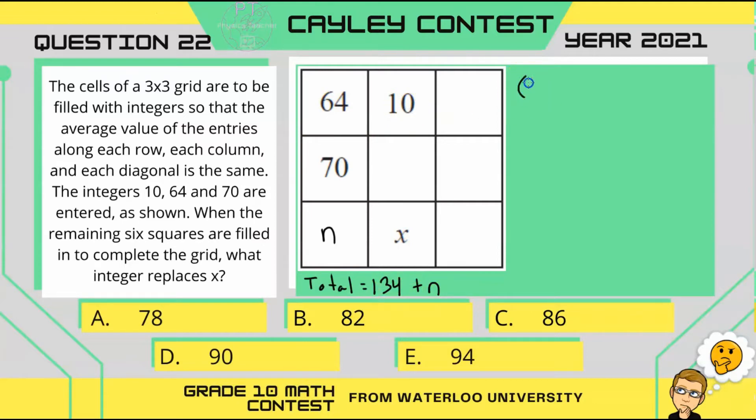So, the total is 134 plus n, and then we subtract 64, and we subtract 10. And that's going to leave us with 60 plus n, which we'll write in here, 60 plus n.